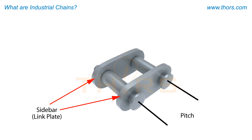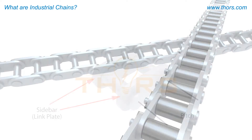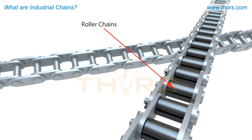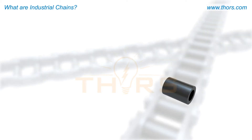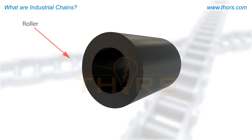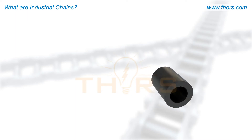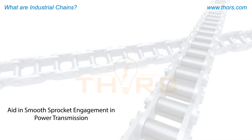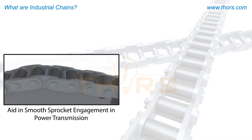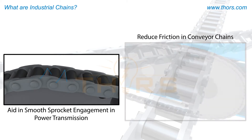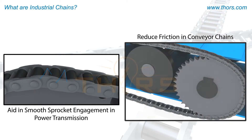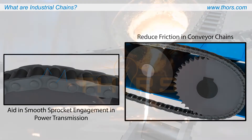The sidebar establishes the pitch of the chain. Chains may be considered either roller chains or rollerless chains. The difference is based on a single piece known as a roller that covers the bushing. Rollers aid in smooth sprocket engagement in the case of power transmission and reduce friction in conveyor chains.